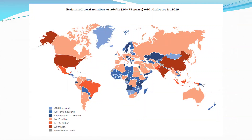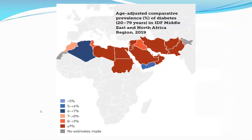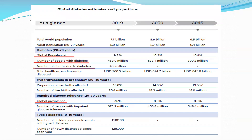This diagram represents the approximate number of diabetic patients in millions distributed worldwide. Areas colored dark red have the highest number of patients. In Egypt, the number of cases is around 10 million. Another diagram shows prevalence rather than absolute numbers — the highest prevalence is in Egypt, Libya, Sudan, and most Gulf countries, estimated at more than 9 percent.